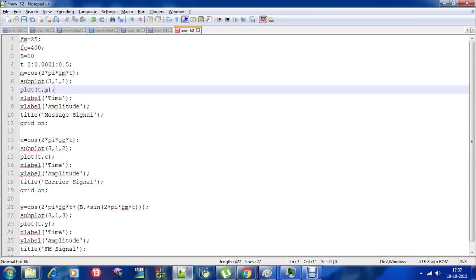As you can see, this is our MATLAB code. I am defining the frequency of the message signal as 25 hertz and the frequency of the carrier is 400 hertz. And this b = 10 is nothing but kf·Am/fm, the modulation index of frequency modulated wave. And this is time period, I am defining from 0 to 0.5 seconds in steps of 0.0001 seconds. Since we are dealing with single tone frequency modulation, the message signal m = cos(2πfm·t). These are just the basic MATLAB functions, subplot and plot. This is xlabel labeled as time, and ylabel is amplitude. And this is our message signal because we are plotting m = cos(2πfm·t).